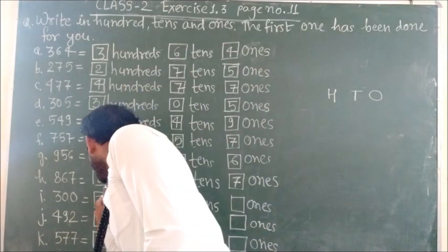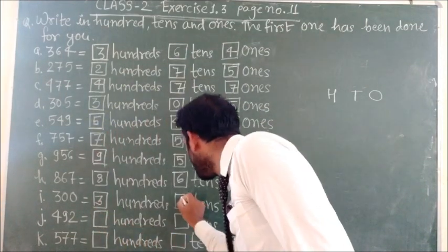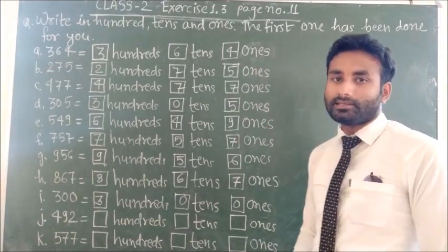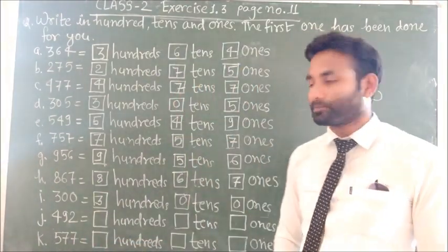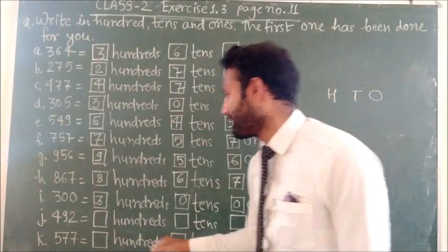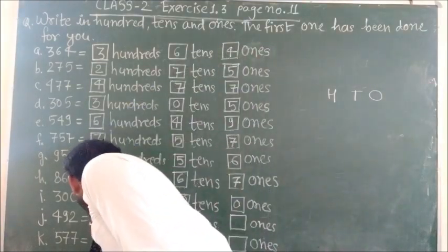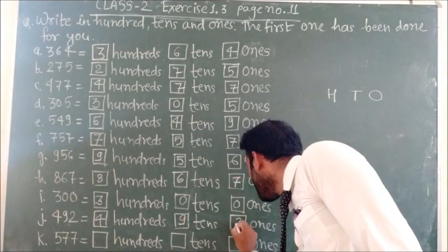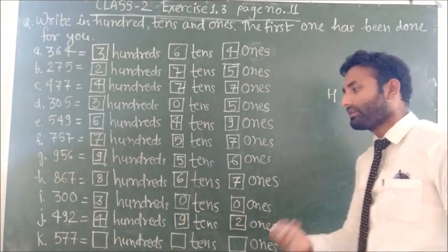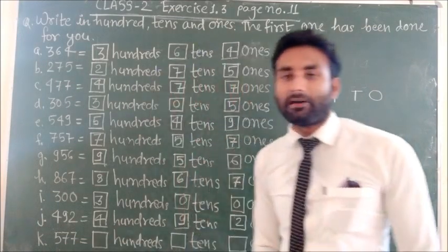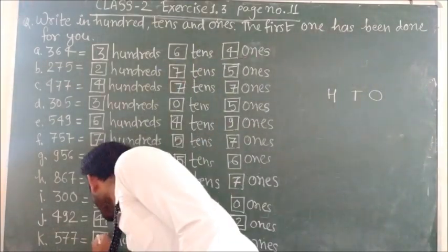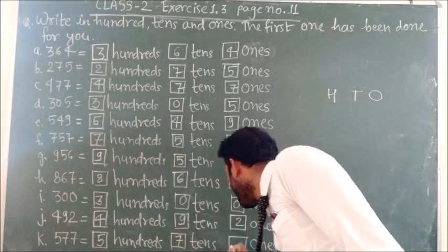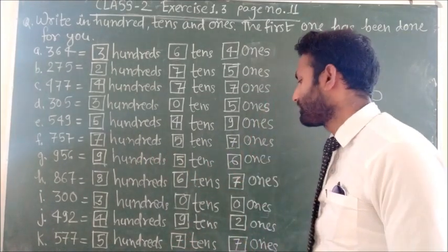Next is 300, that means 3 hundreds, 0 tens, and 0 ones. Next is 492, so 4 hundreds, 9 tens, and 2 ones. Next is 577, so 5 hundreds, 7 tens, and 7 ones.